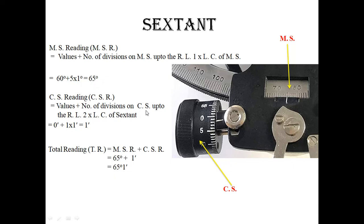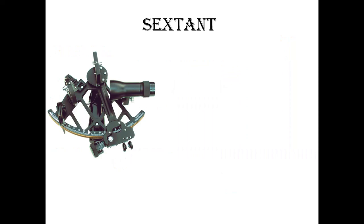For the circular scale reading: take the values plus the number of divisions on the circular scale up to reference line two, multiplied by the list count of the circular scale. The value is zero and the number of divisions up to reference line two is 1, so 1 multiplied by 1 minute equals 1 minute. The total reading is 65 degrees and 1 minute.